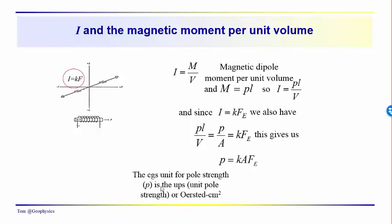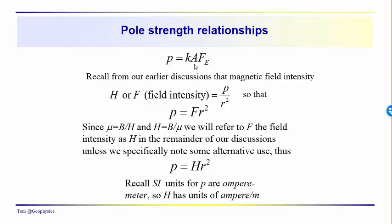The CGS units for pole strength P are ups, and the unit pole strength can also be expressed in terms of Oersted centimeter squared. K is a dimensionless constant, and the area in CGS units is centimeter squared. This is our basic relationship for the pole strength. The pole strength is equal to the magnetic susceptibility times the cross-sectional area of the coil times the magnetizing field strength. We should also recall that the field intensity H or F is equal to P over R squared — the pole strength over R squared — where R is the distance to a test pole. So P equals F times R squared.